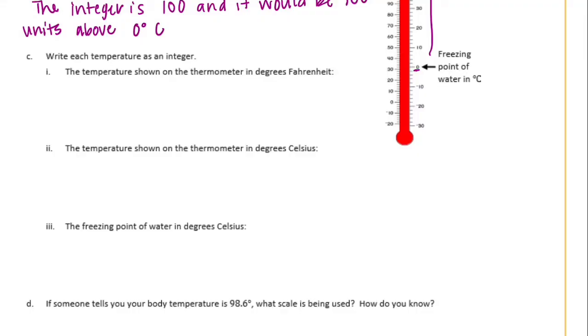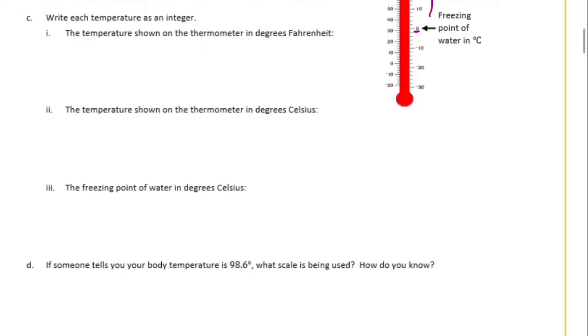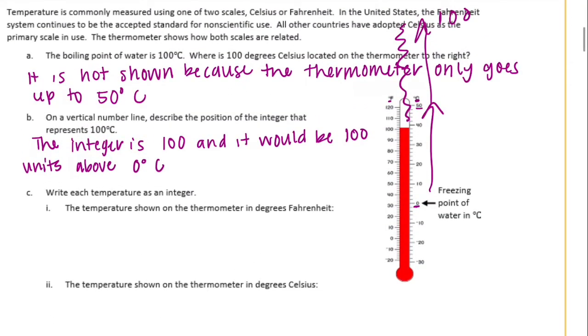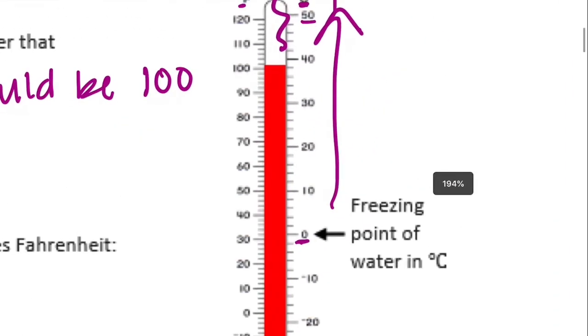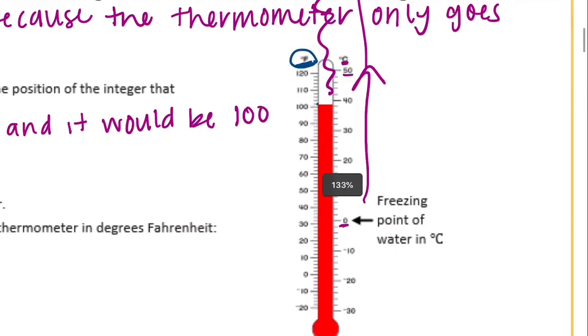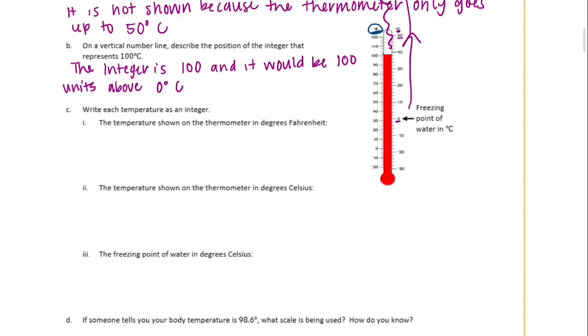Part C: write each temperature as an integer. The temperature is shown on the thermometer in degrees Fahrenheit. So we're looking for what temperature is shown on here in degrees Fahrenheit. So we're looking at the Fahrenheit side of the scale. And that looks like it's about, let's see, that might be like 102, 100 maybe. Let's just go with 100. So 100 degrees Fahrenheit is shown.